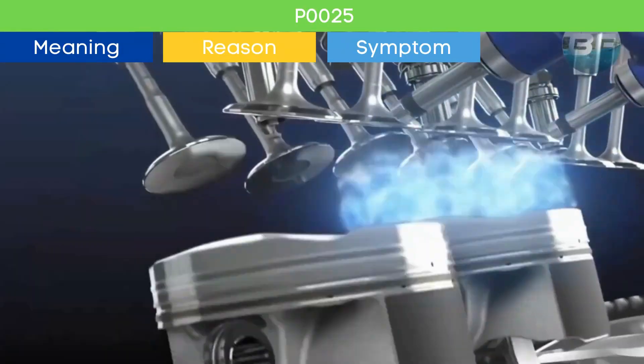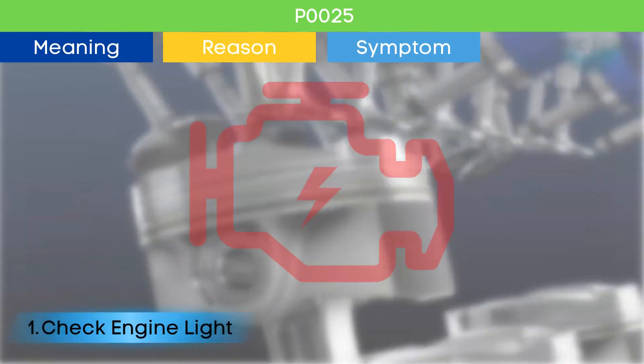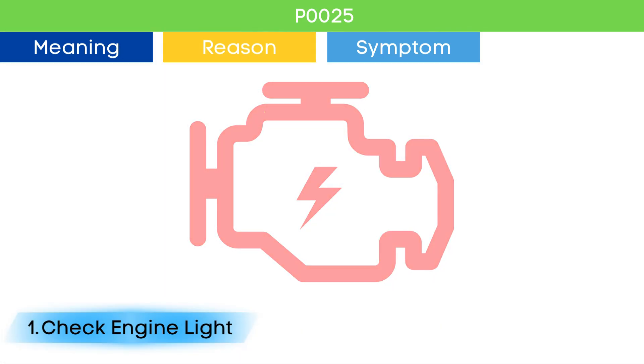Symptom number one: check engine light. The check engine light comes on if there are any active trouble codes related to the engine management system.